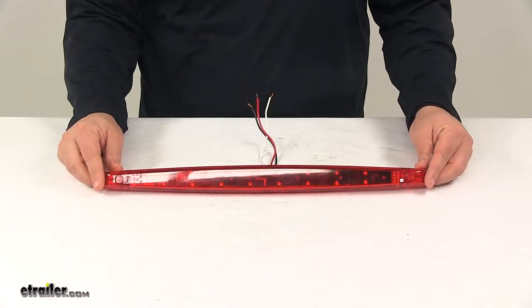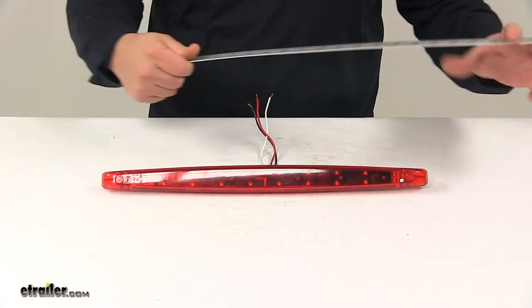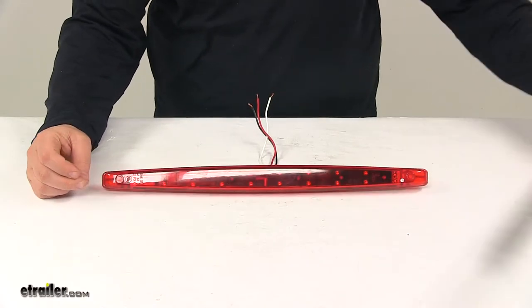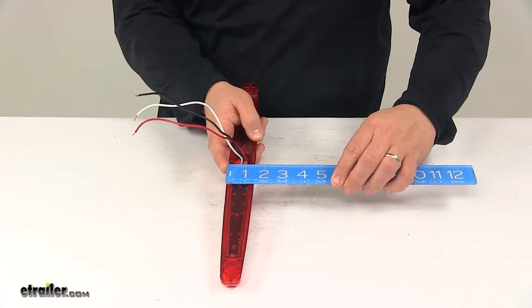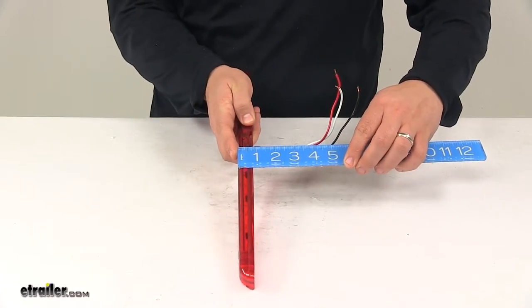The overall measurements of the unit, measuring edge to edge. It measures about 18 inches long. The overall height is an inch and a half. The overall depth is about three quarters of an inch.